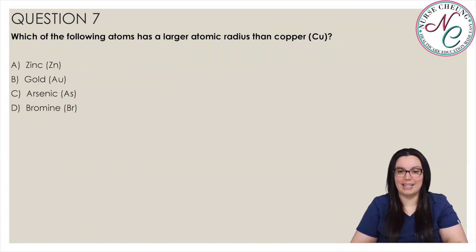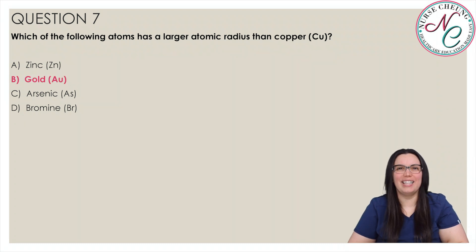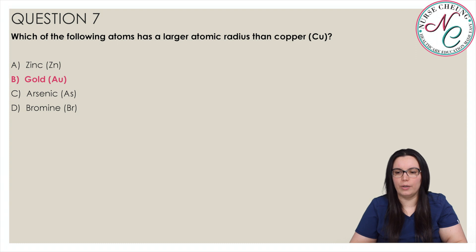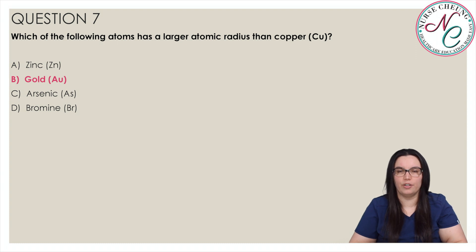Which of the following atoms has a larger atomic radius than copper? Is it A Zinc, B Gold, C Arsenic, or D Bromine? And the correct answer is B Gold. The length of the atomic radius decreases as you move from left to right across the period or row of the table. Zinc, Arsenic, and Bromine are all located to the right of copper on the fourth row of the table, so atoms of these elements would all have smaller atomic radii than copper. The length of the atomic radius increases as you move down a group or column of the table, so gold atoms would have a larger atomic radius than copper atoms.